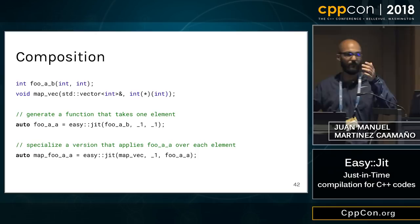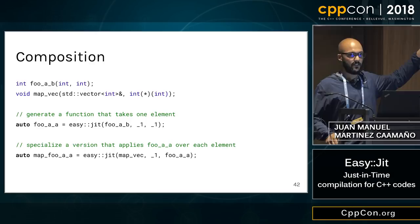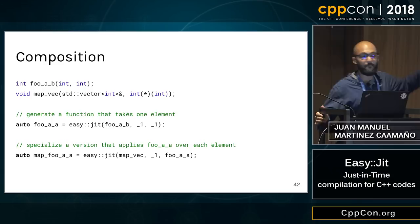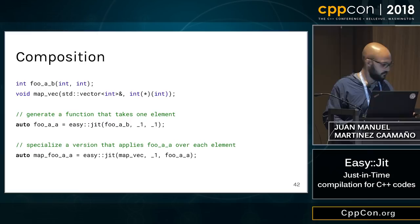You can also compose the generated objects with one another. For example, the function foo takes two integers a and b. We generate a new function foo_a that only takes one integer, and we're now able to pass foo_a to a map_back function and obtain something further specialized.